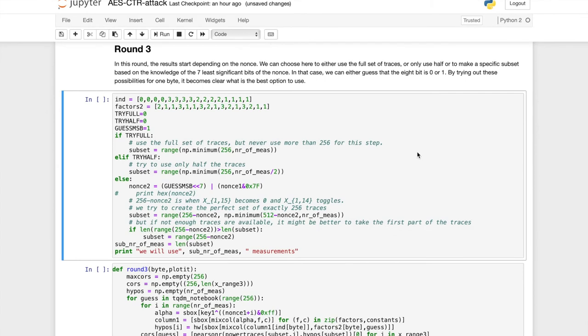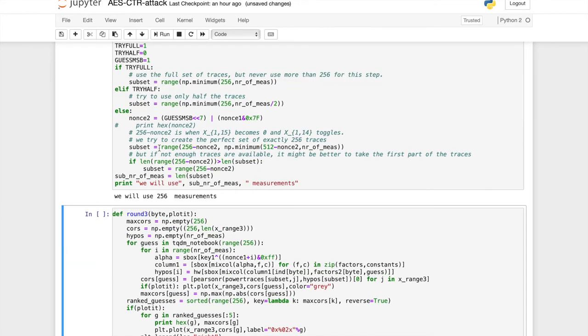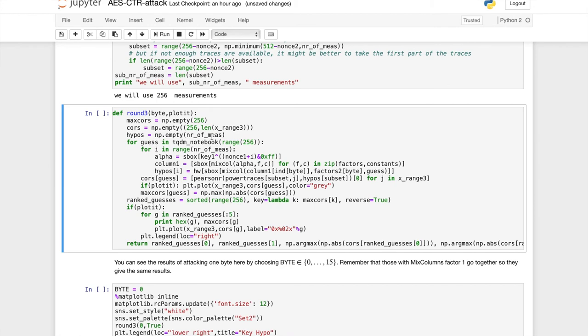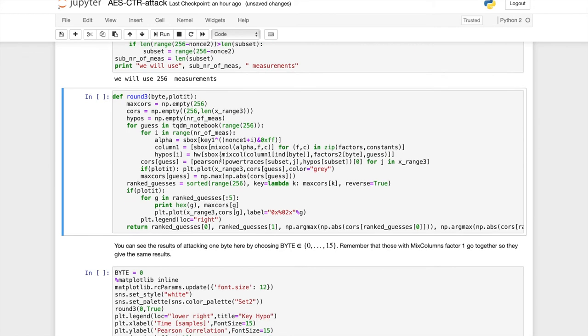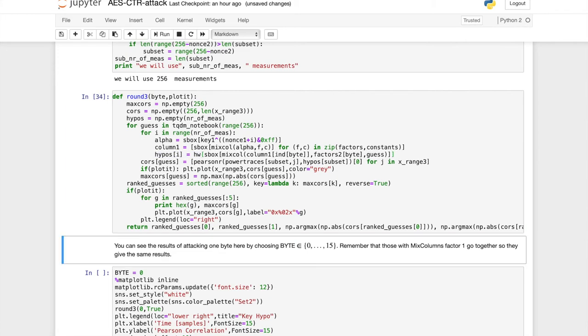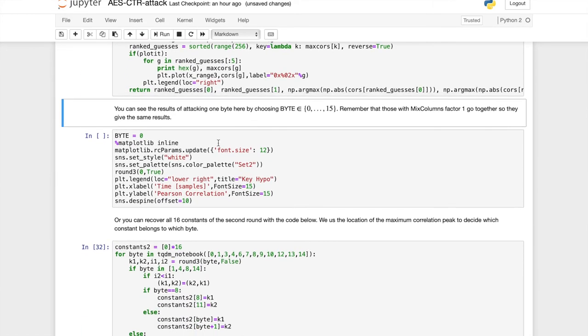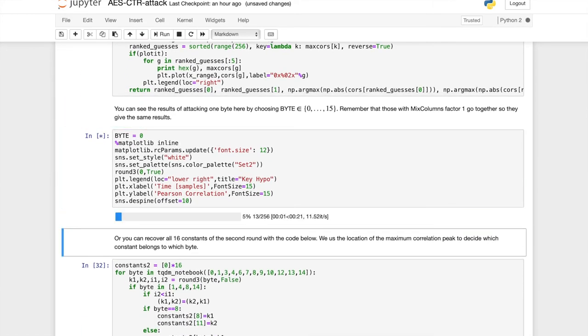Okay, so let's start by doing the most obvious thing, which is assume that we can just use the same methodology as before and use all the traces. The code for the third step is essentially the same as the previous steps. The only difference is how we compute the hypothesis. And so if we try this, let's try this on the first byte.